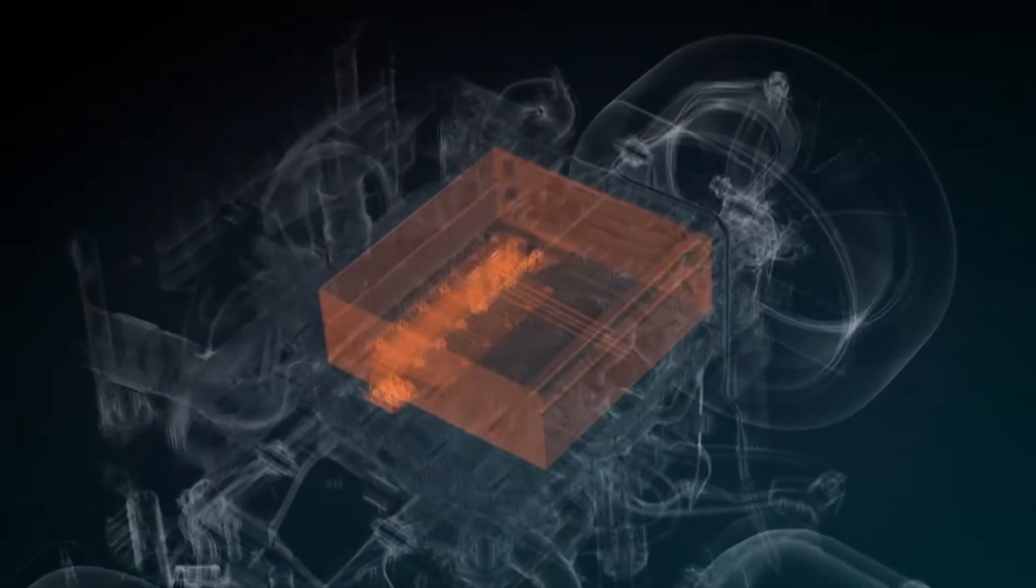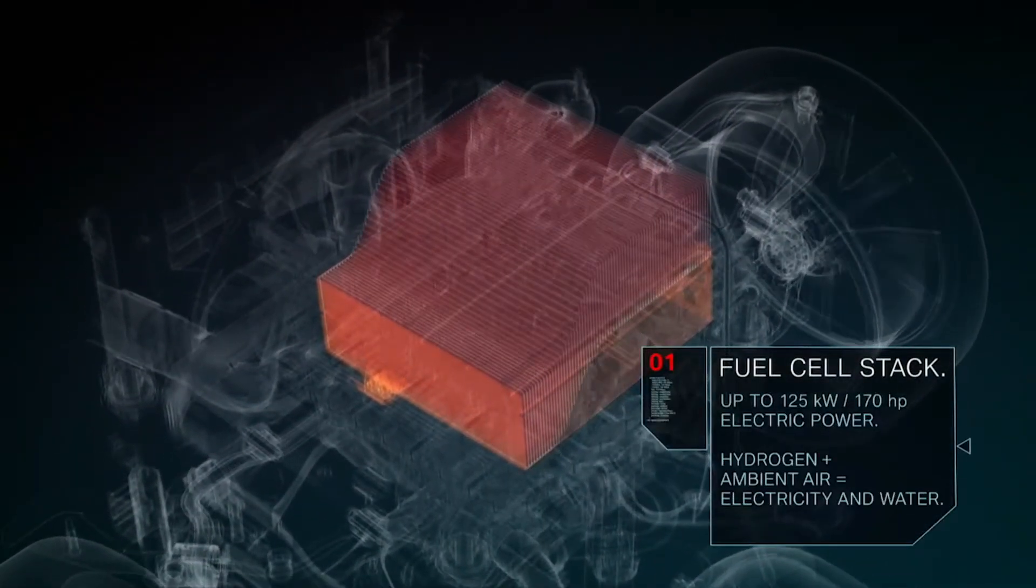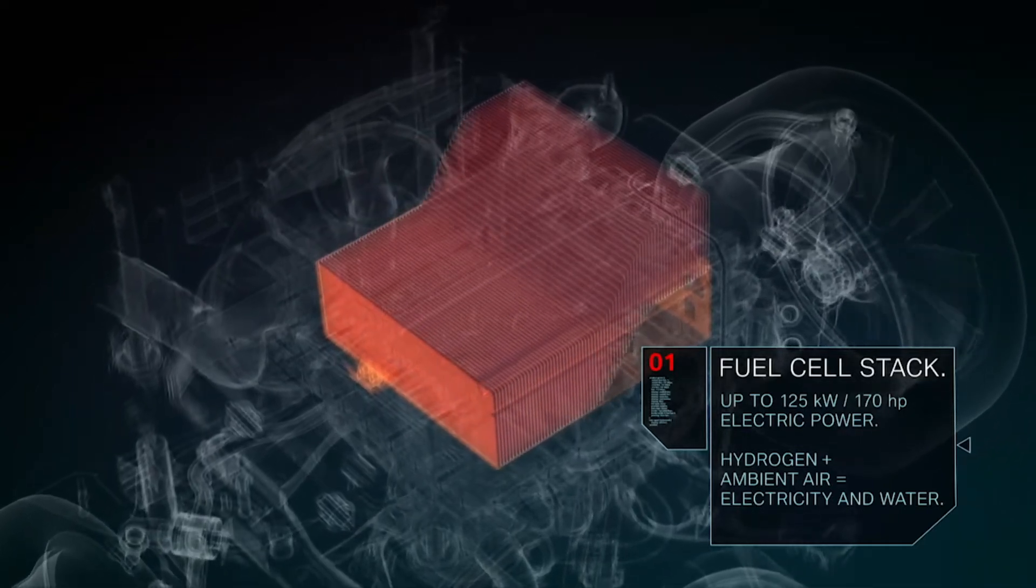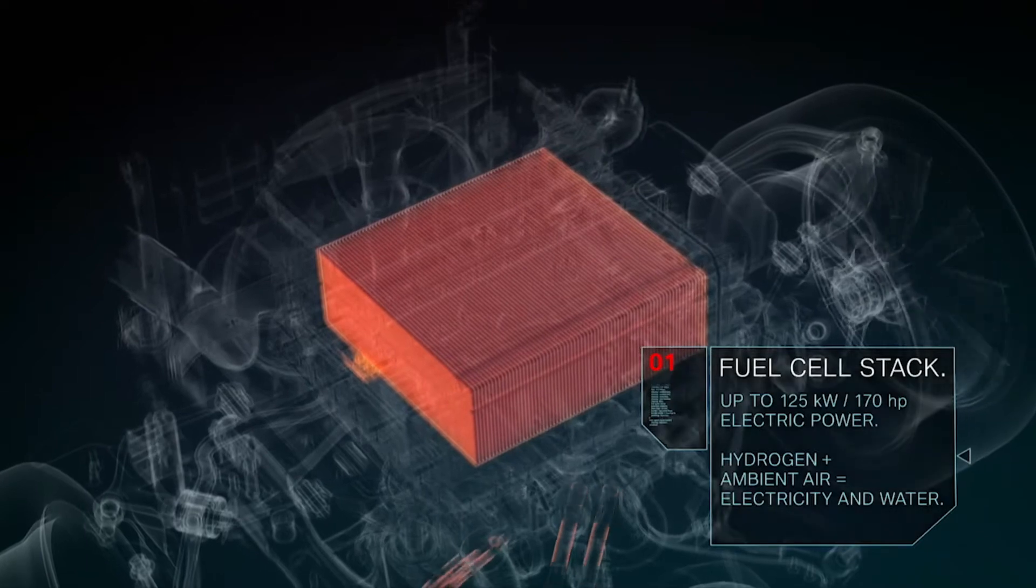The fuel cell system generates up to 125 kilowatts of electric power from hydrogen and ambient air oxygen. The vehicle emits only water vapour.